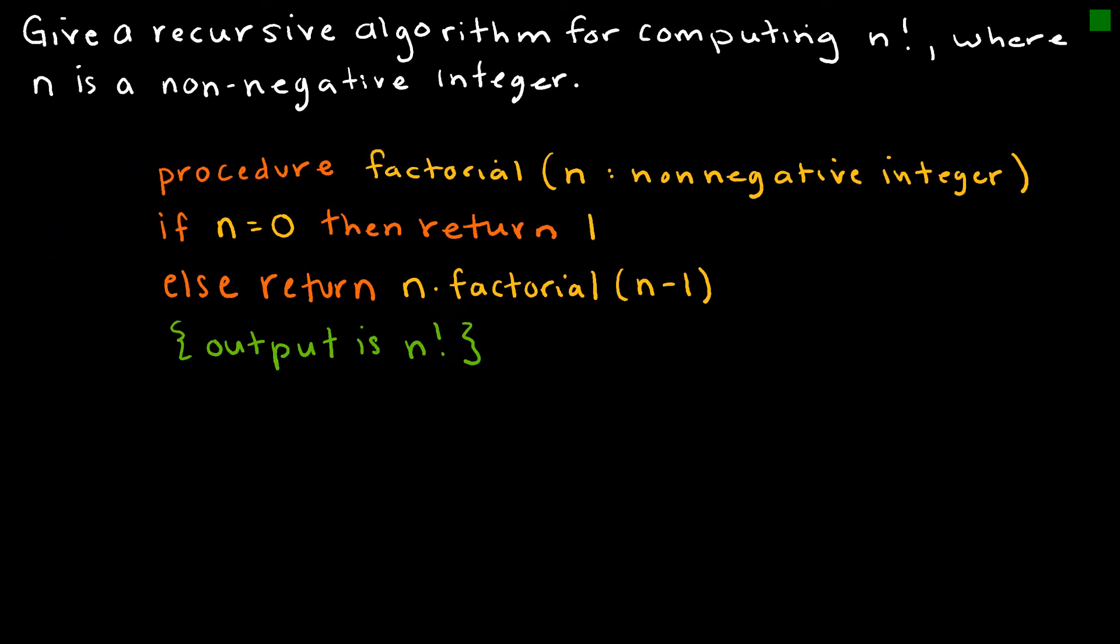Let's look at one now for n factorial. Obviously, we take whatever the value is times each value all the way down to one. The procedure is called factorial. We're taking the factorial of n and n is a non-negative integer. Then it says if n is equal to zero, then return one because zero factorial is one.